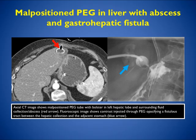In this case, look — the PEG tube is in the left lobe of the liver with fluid around it. This is an abscess with a gastro-hepatic fistula. This is indeed problematic, and you can see on fluoroscopy where the contrast is going into the liver.